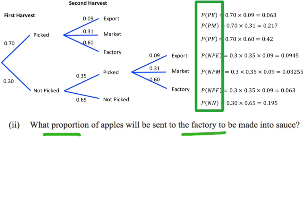The very first combination: apples being picked and then sent for export, so that does not meet the criteria. The next one, PM, being picked and going to the market, that doesn't meet my criteria of going to the factory. The next one, PF, picked and then going to the factory, that does meet the criteria, so I'm interested in that particular value.